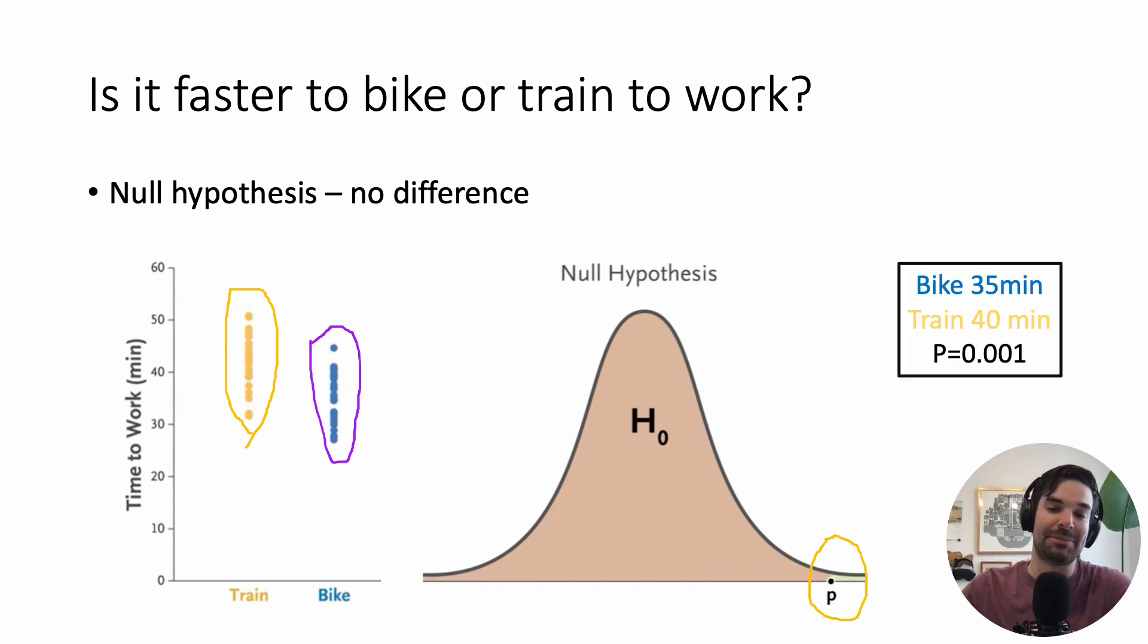So in this toy example, maybe the average time it took to bike was 35 minutes and to take the train 40 minutes, you calculated a p-value of 0.001. Again, that's using formulas from either Stata, R, SAS, any programming language you want. And this p-value suggests that these data are inconsistent with this null hypothesis of no difference, whether you take the bike or train to work. And instead, it suggests, hey, maybe the bike is actually faster.